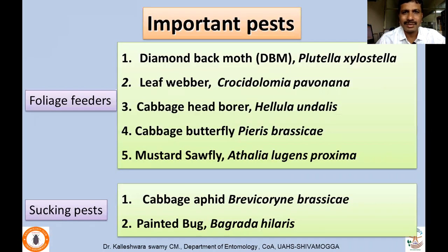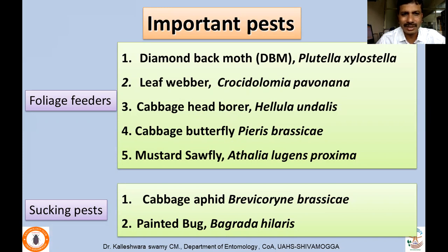We'll take one by one the important pests. We'll start with the foliage feeders which include Diamond Backmoth Plutella xylostella, Leaf Webber Crocidolomia pavonana, Cabbage Head Borer Hellula undalis, Cabbage Butterfly Pieris brassicae, and Mustard Sawfly Athelia lugens proxima. The second group of pests includes Cabbage Aphid Brevicoryne brassicae and Painted Bug Bagrada hilaris. These are the pests we'll discuss in detail.